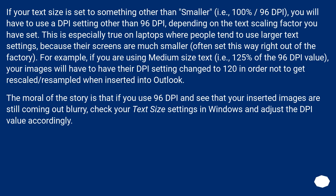This is especially true on laptops where people tend to use larger text settings because their screens are much smaller, often set this way right out of the factory. For example, if you are using medium size text — i.e., 125% of the 96 PPI value — your images will have to have their PPI setting changed to 120 in order not to get rescaled or resampled when inserted into Outlook. The moral of the story is: if you use 96 PPI and see that your inserted images are still coming out blurry, check your text size settings in Windows and adjust the PPI value accordingly.